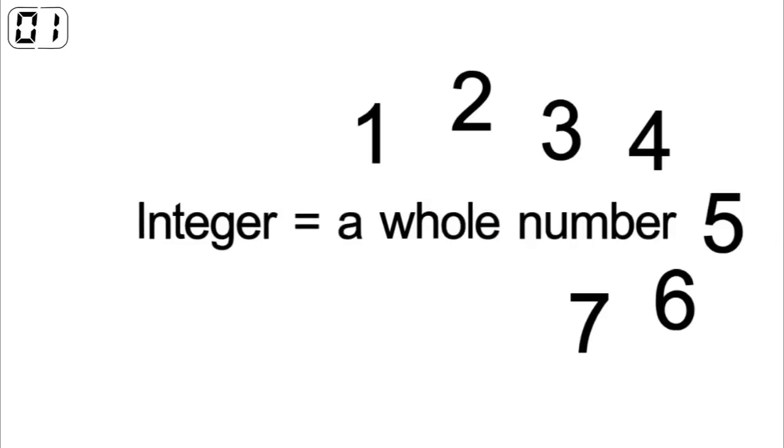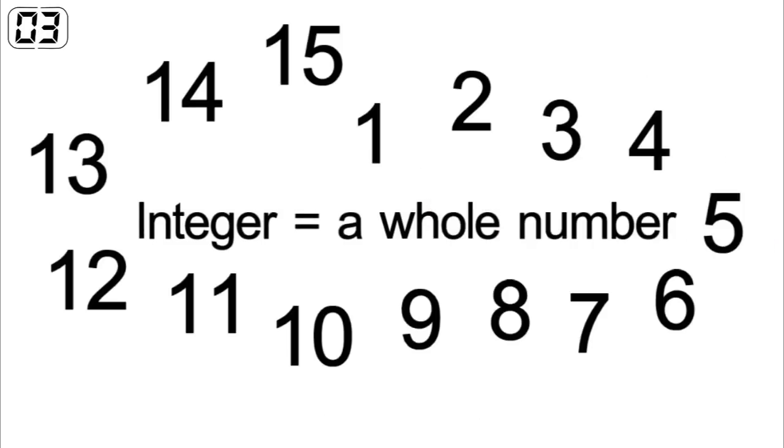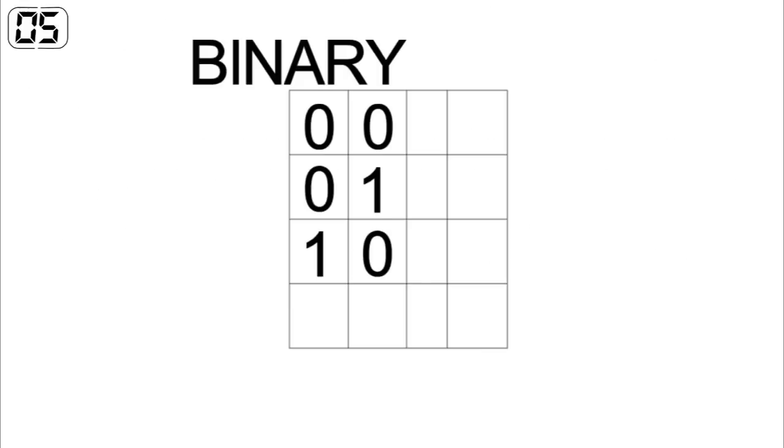First up, we need to know that an integer is a whole number. Binary integers are made up of 0s and 1s.